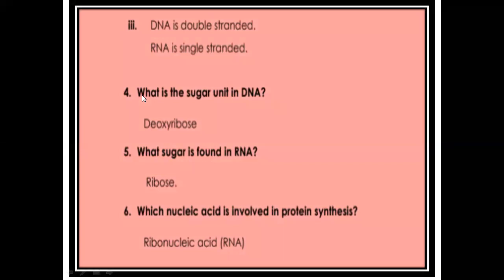To summarize: DNA is a double-stranded structure while RNA is a single-stranded structure. Deoxyribose sugar is present in DNA while ribose sugar is present in RNA. In DNA thymine is present while in RNA uracil is present. We can write these three points as the structural differences between DNA and RNA.